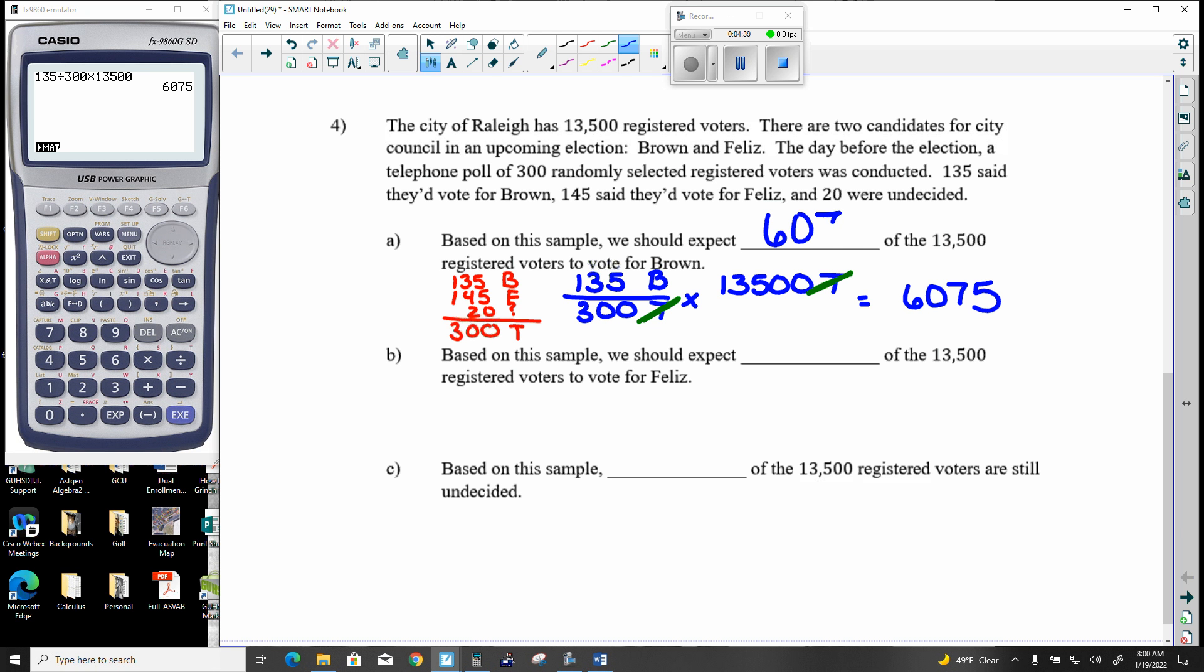Same question, but this time we're looking for Feliz. So that would be 145 of 300. Now apply this to 13,500 total. So I see that the label total drops and this will be what it is.